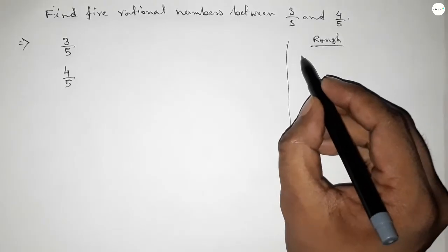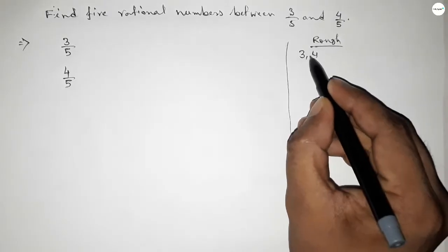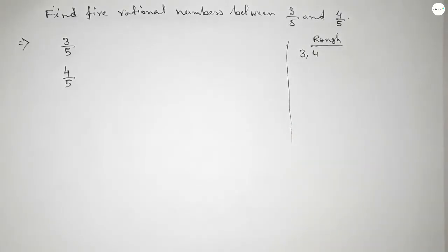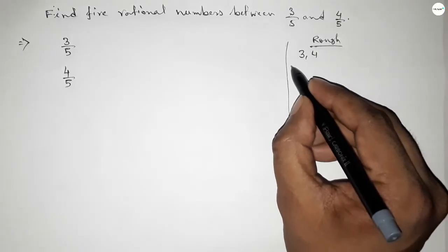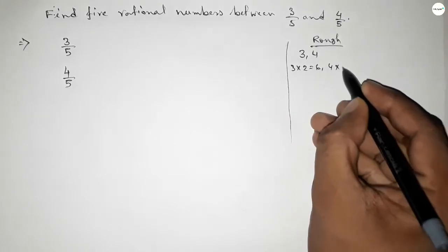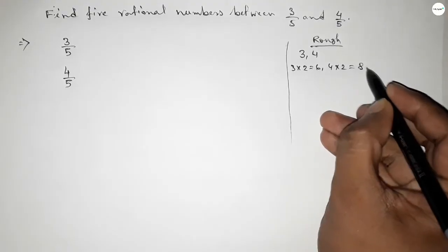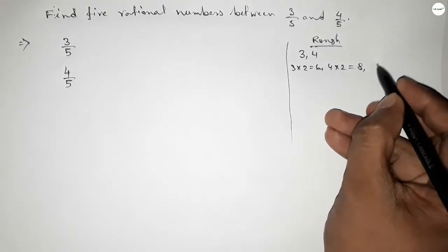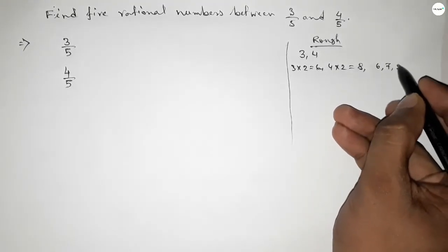If you multiply 3 with 2, then this is 6, and 4 with 2 is 8. So between 6 to 8 we can get one natural number, but we need 5 natural numbers.